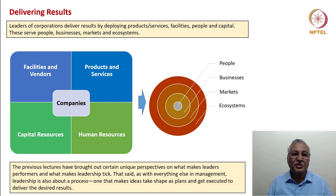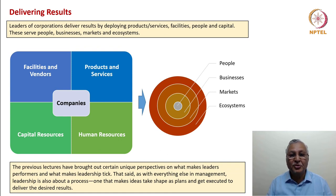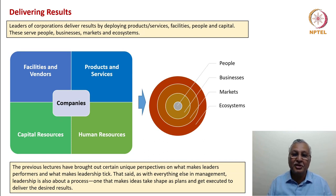Leaders of corporations deliver results by deploying products and services, facilities, people and capital. These serve people, businesses, markets and ecosystems. If you look at the concentric circle model, people are at the core and central of this paradigm. Then they create the businesses which serve the markets, and with vendors, dealers and various other stakeholders, an entire ecosystem is formed.